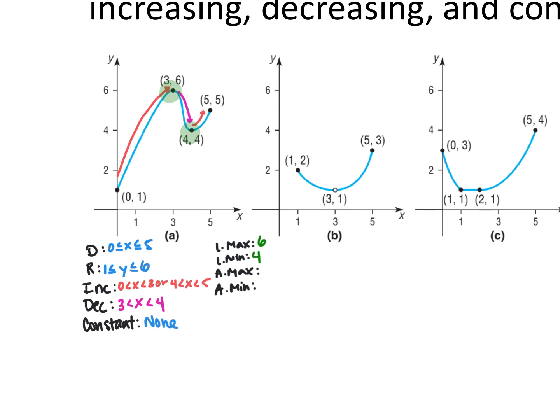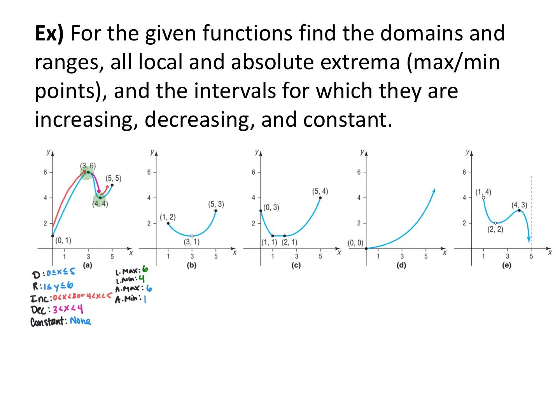For local or relative extrema, look for a maximum where it goes from increasing to decreasing, and a minimum where it goes from decreasing to increasing — it has to make that turnaround. The local maximum is 6, since it's always the y-coordinate. The local minimum is 4, at y = 4. For absolute max, it's also 6, since it's the highest point. For absolute min, it's 1, the lowest point on the graph. Notice the range matches the absolute max and absolute min. Key reminders: increasing/decreasing/constant are intervals of x, and extrema are always y-values.